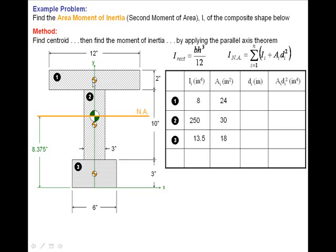So for shape number one, remembering that it was fourteen inches up from this base point, the neutral axis of the composite shape is eight point three seven five inches up. That distance is five point six two five inches. Now shape number two is very close to the centroid of the composite shape. In fact, it's only point three seven five inches away. And for shape number three, it's six point three seven five inches.